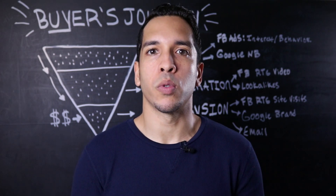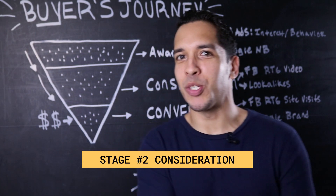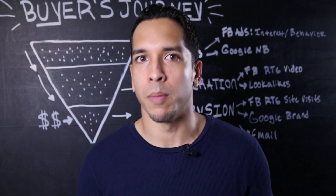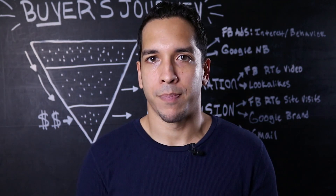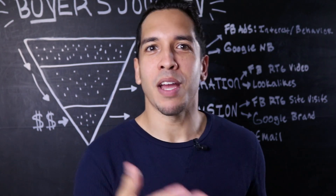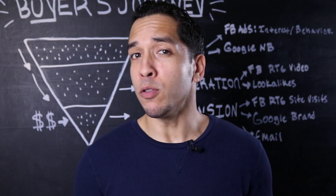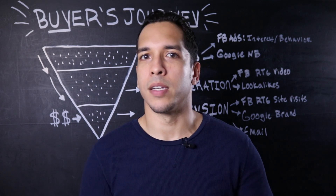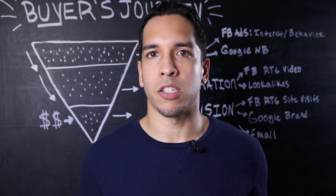At that point you begin to consider your options, transitioning into stage two: consideration. This is when you are actively researching your options to solve your problem. There are a few different ways to solve a cracked screen: accept it and move on, use insurance through your carrier to get a replacement phone, buy a new or used phone on eBay or Amazon, or pay $75 to $100 to get the screen repaired.